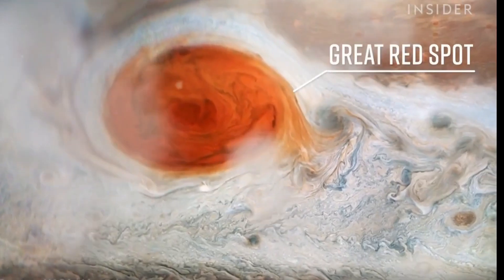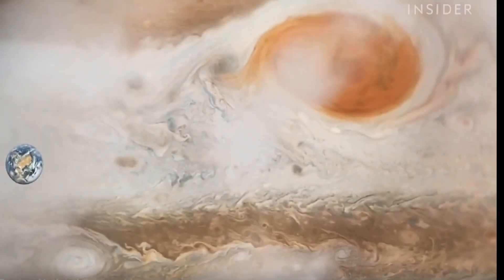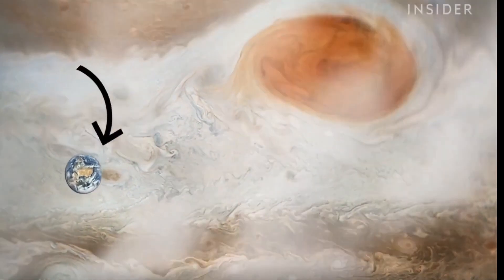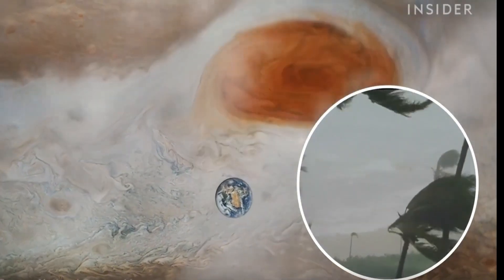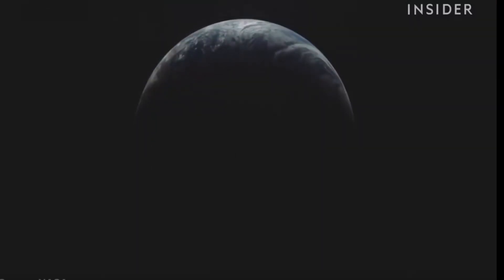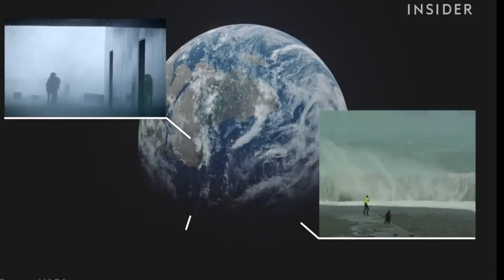Like the great red spot, shown in white here. It's a storm that's bigger than the size of Earth, with wind speeds about twice as strong as the most intense hurricanes. Scientists say seeing how storms on Jupiter work could help them understand Earth's weather systems too.